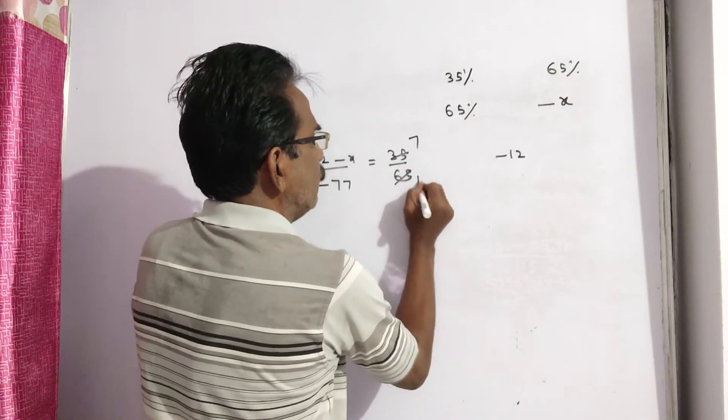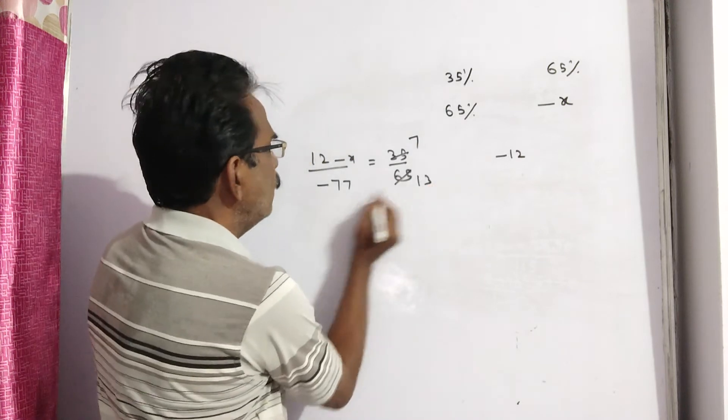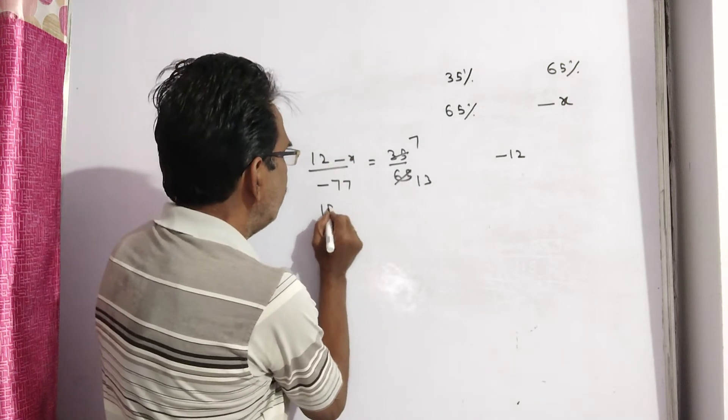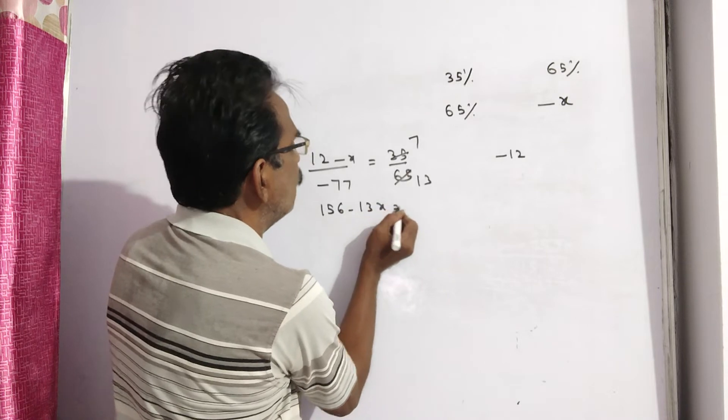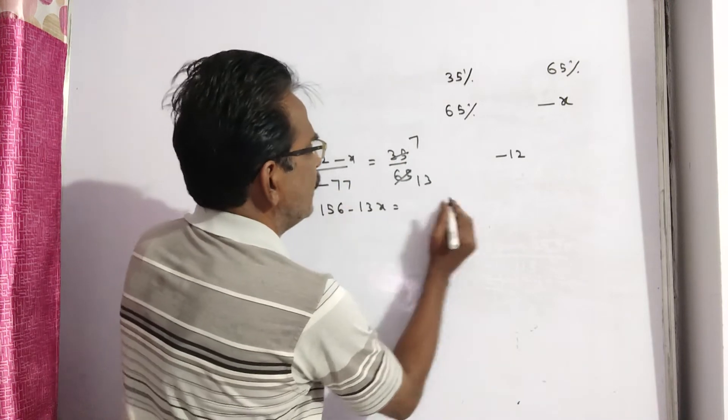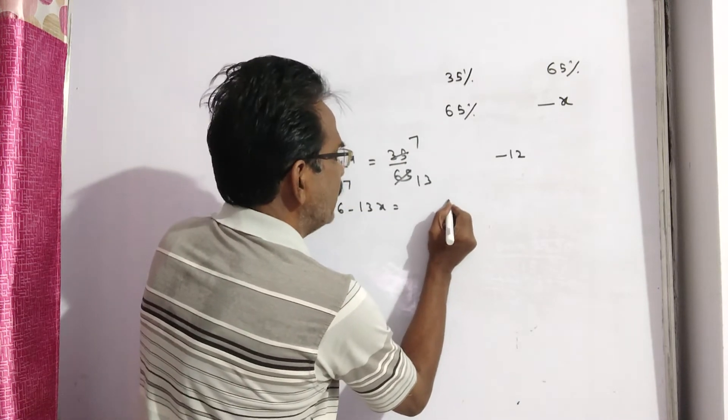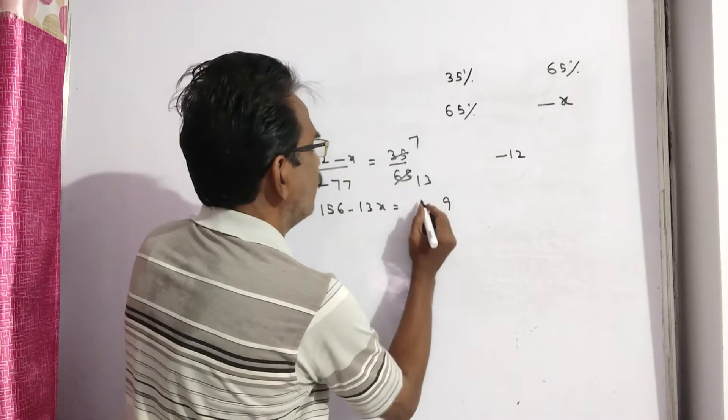5 sevens, 5 thirteens. So 13 into 12, 156 minus 13x is equal to 7 into minus 77. 7 sevens 49, 7 sevens 49 plus 4, 53.